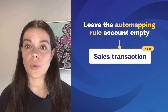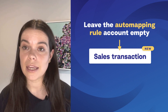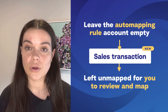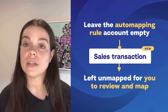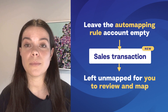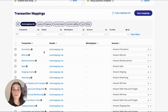Alternatively, you can leave the Auto Mapping Rules unmapped. This way, when a new transaction type appears, you will get notified that you need to map this new transaction before you can post your entry to your accounting software. Auto Mapping Rule lines are the only lines that can be left unmapped within your A2X mapping page.